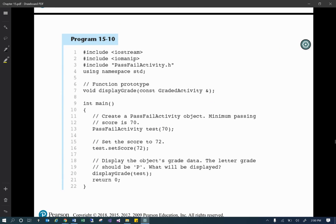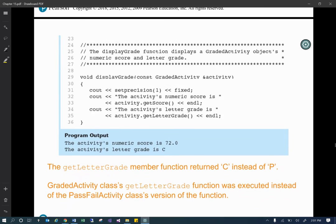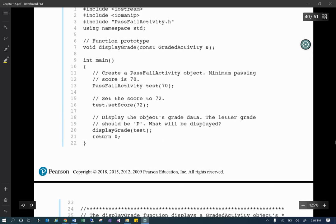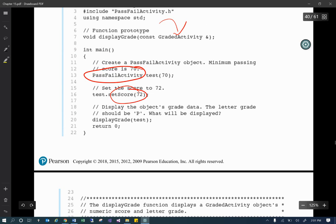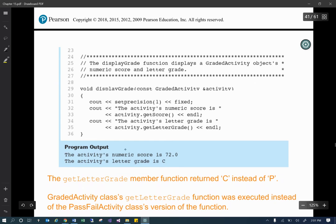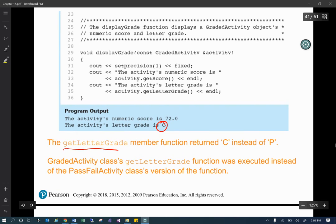So here they're showing an example of setting up a pass activity test, which we know is a type of graded activity. We know that. And that means that it's going to use, when we pass it into this, it's going to use the set score that is supposed to be part of that pass activity. But we can see that it didn't. The grade letter, grade member function returns C instead of P. Because 72 is a pass. So why did that happen?